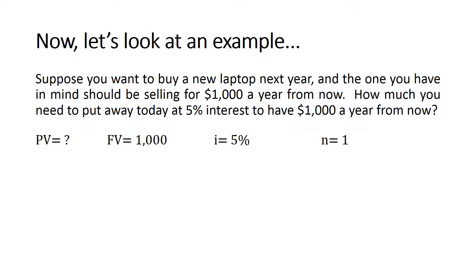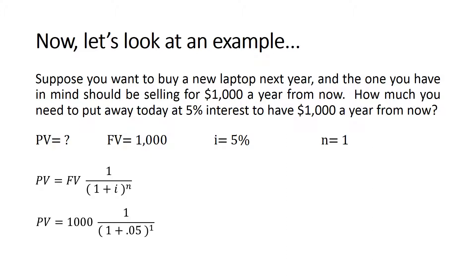Here are the given values: the future value is $1,000, the interest rate is 5%, n is 1, and we are trying to solve for the present value. We will use the present value equation and then plug in the numbers. You might want to enter all the numbers at once in your calculator or break them down in two parts. In any case, you will get the answer which is $952.38. This is the present value of your $1,000.